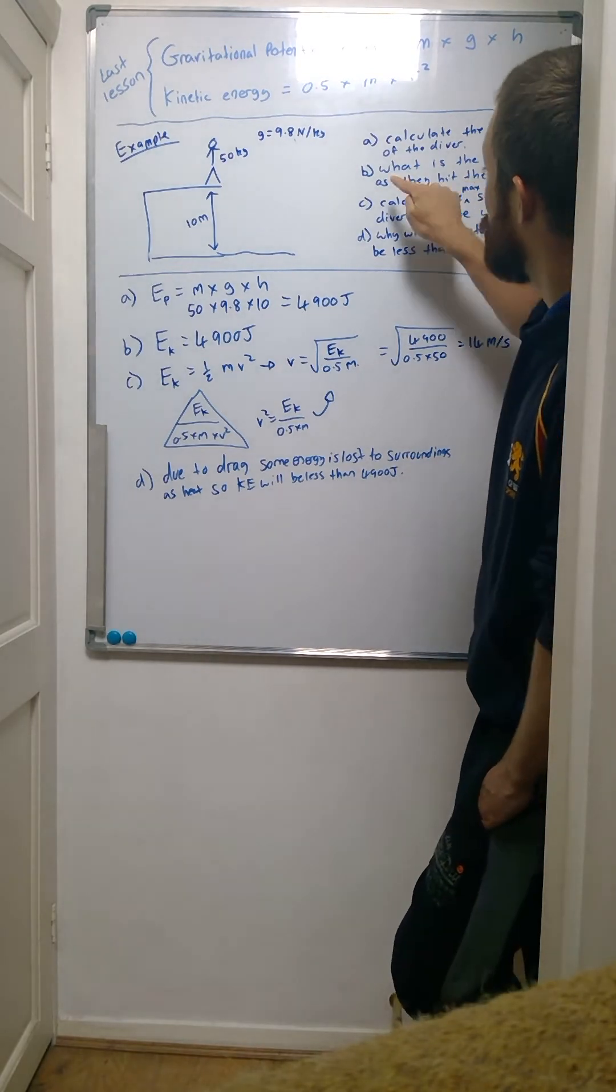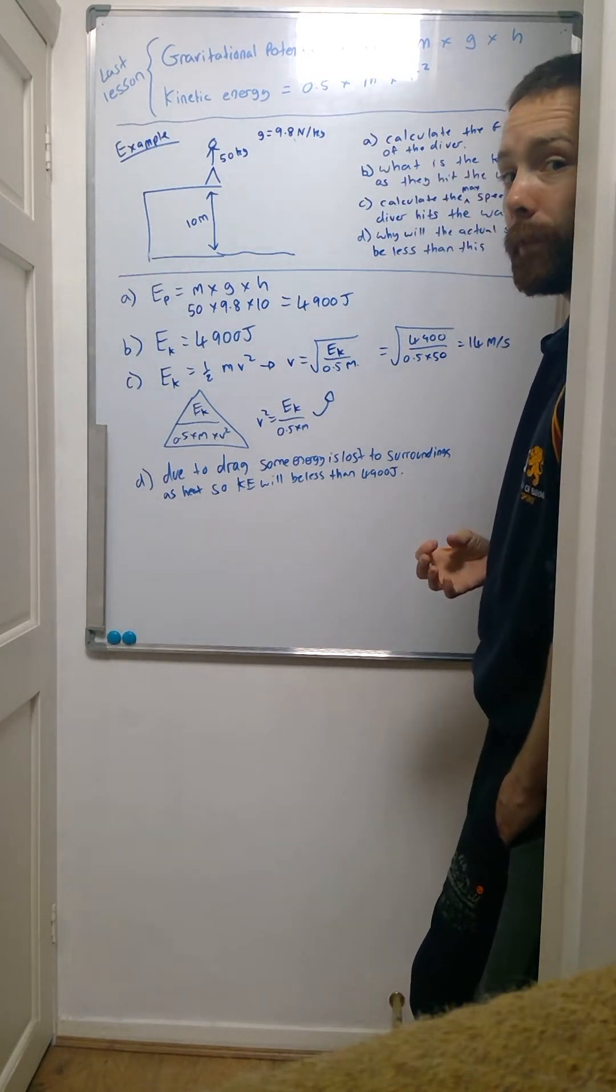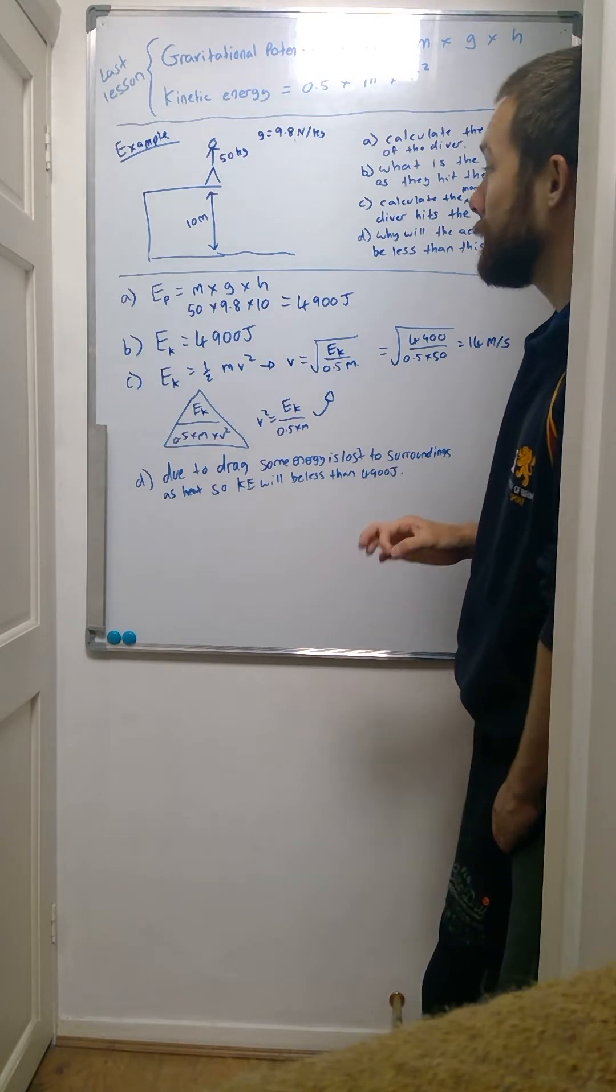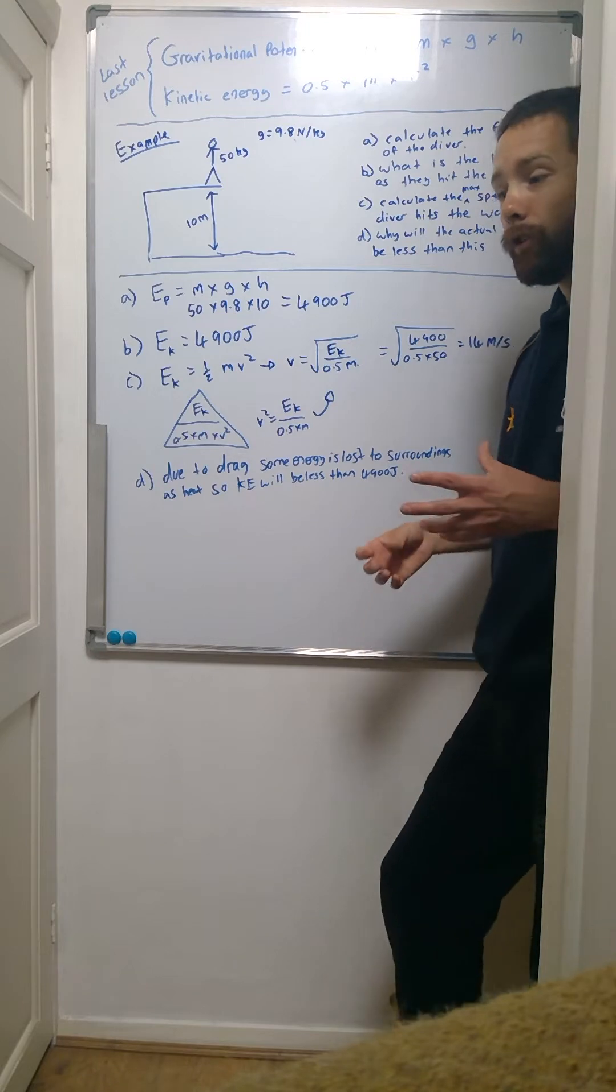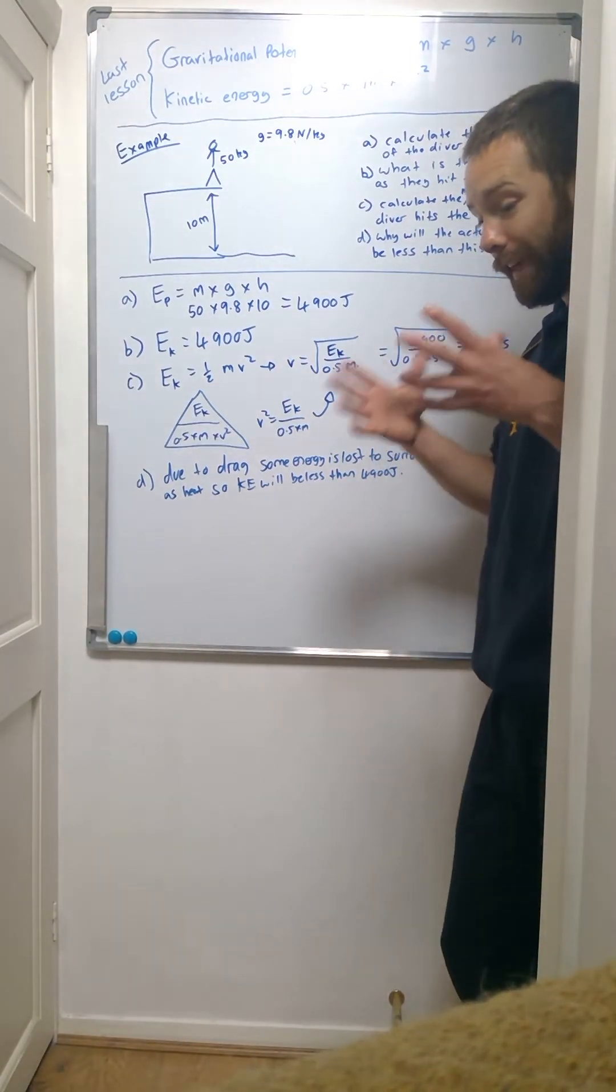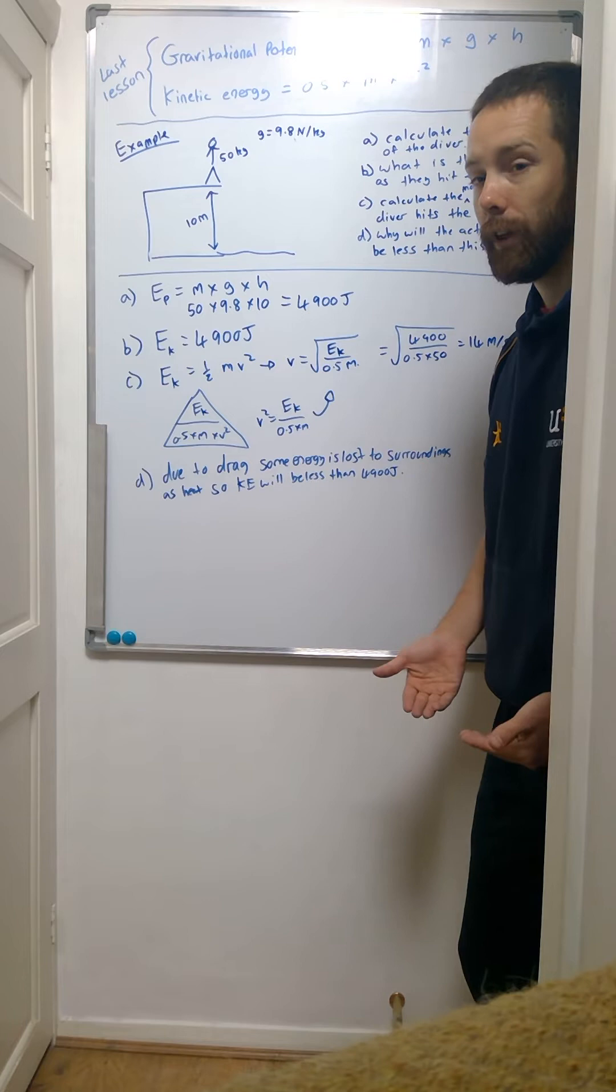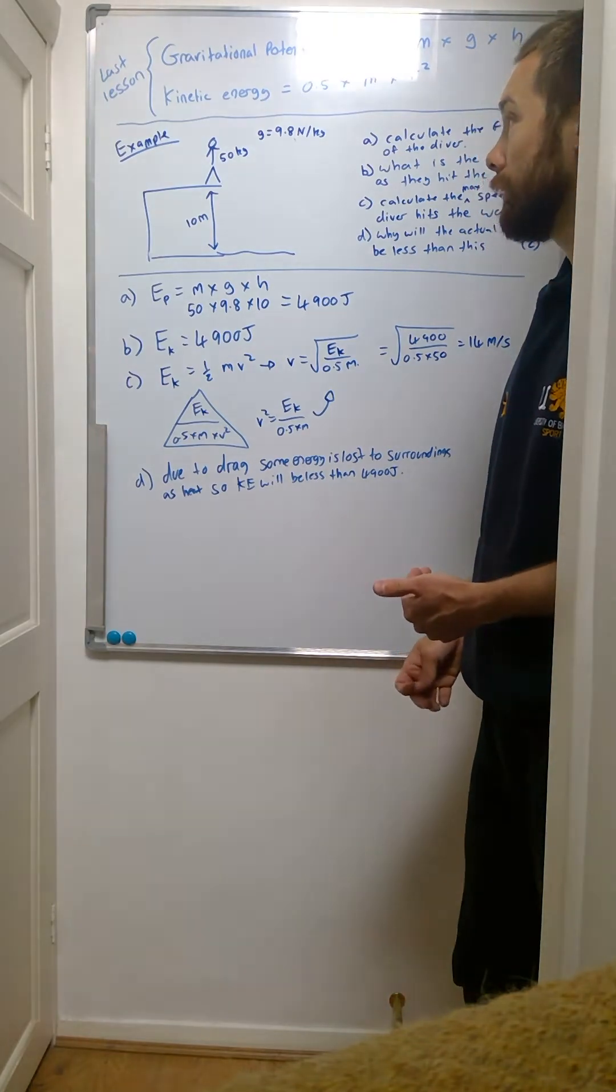Because it says 'what is,' that means it's just asking us to identify something. So it's not asking us to actually calculate - it's just saying there is an answer, you just got to tell me what it is. And the reason we know what that answer is is because we know that the energy, the total amount of energy, cannot change.